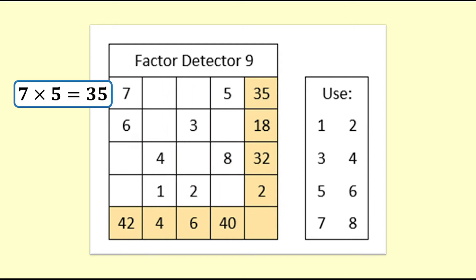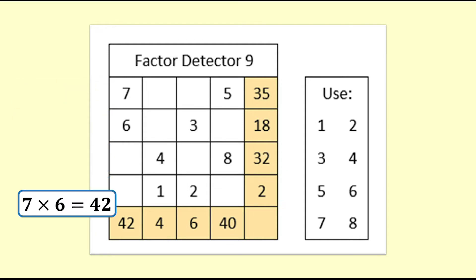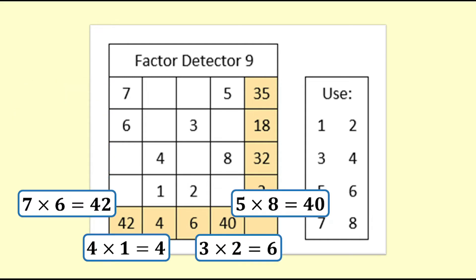The numbers in each row multiply to give the product at the end of the row. The numbers in each column multiply to give the product at the bottom of the column.